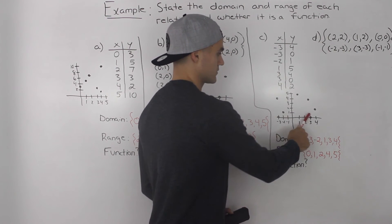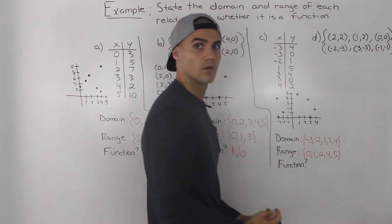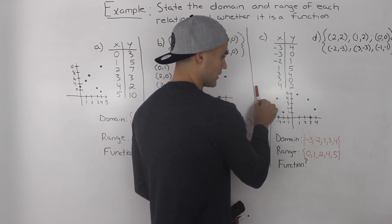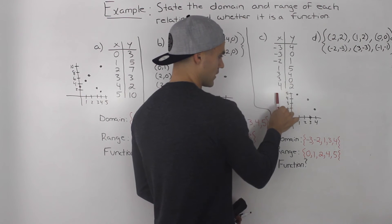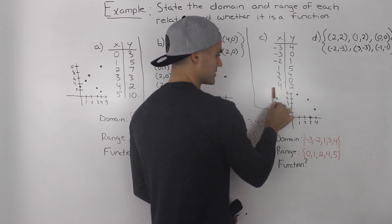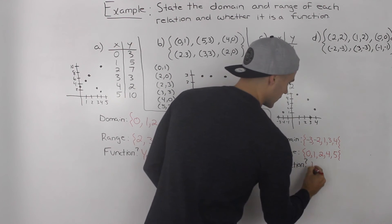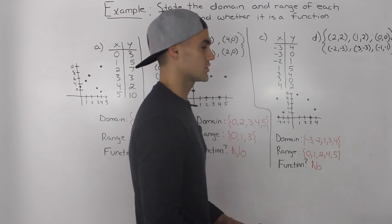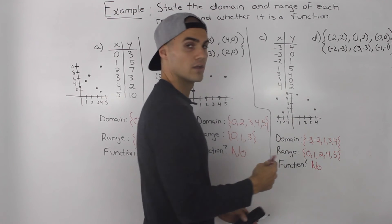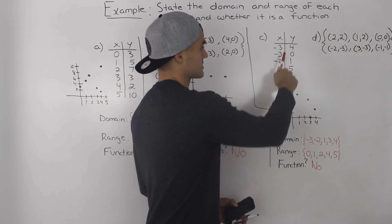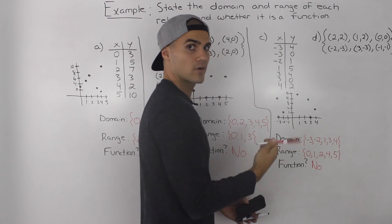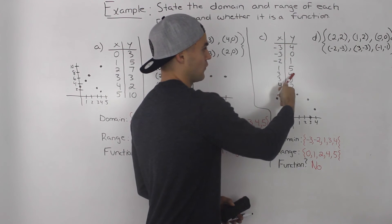Any y values that repeat, like the two 0s or the two 4s, I only wrote once. To test whether it's a function, let's apply the vertical line test. Running a vertical line through the graph, it fails right away at x = negative 3, where multiple points touch the vertical line. So it's not a function. From the table, you can see multiple y values for x = negative 3 (giving 4 and 0) and for x = positive 3 (also giving 4 and 0).